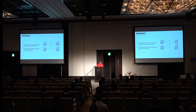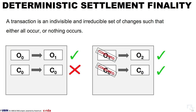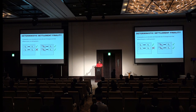Privacy is something unique to Corda across other DLT platforms. We do not have a broadcast mechanism — we share data only on a need-to-know basis using point-to-point communication. Confidential identities were utilized in the Ubin prototype to mask the identities of transacting parties, shared only on a need-to-know basis. For settlement finality, atomicity is required — a transaction in Corda is an indivisible, irreducible set of changes that either all occur or nothing occurs. We can't have an obligation move from one state to another while cash has not.